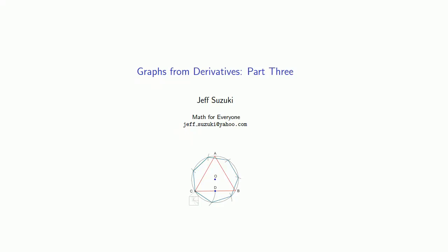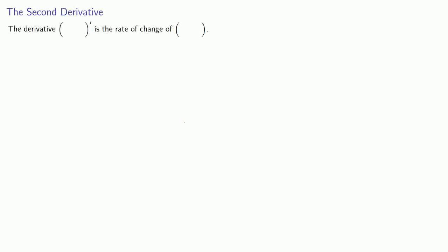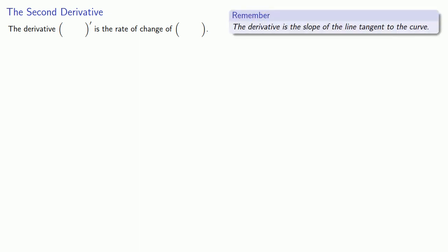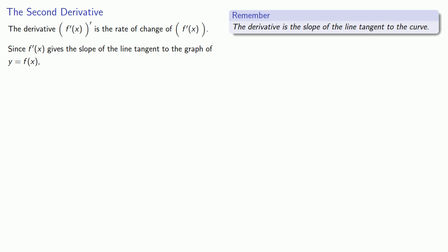Concavity is a geometric concept, but it's hard to compute with geometric concepts. So let's see if we can tie this to our algebraic concept of the derivative. The derivative gives the rate of change, and geometrically it gives the slope of the tangent line to the graph of y equals f. So if the derivative of the derivative is greater than 0, then the derivative itself is increasing.